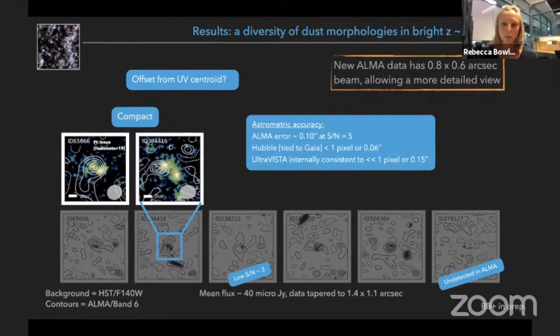So we expect the error to be about 0.1 arc seconds on the position, but we do think that these are physical offsets that we're seeing here.